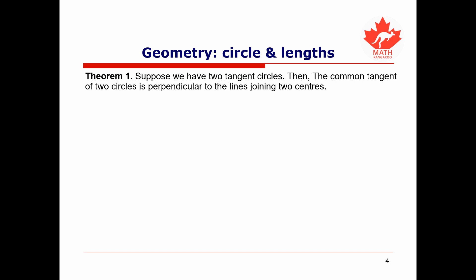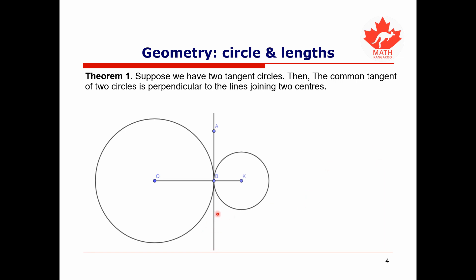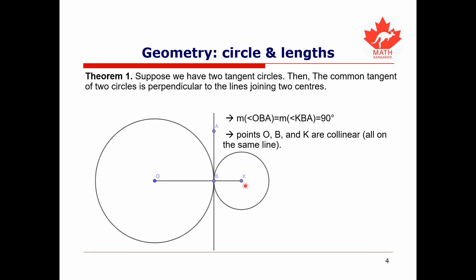Now let's have a look at an important theorem related to circles that are tangent to each other. Suppose we have two circles that are tangent to each other. The theorem tells us that the common tangent line of the two circles is perpendicular to the line joining the two centers. The line segment OB is perpendicular to the tangent line, and the line segment BK is also perpendicular to the tangent line. So we can deduce that points O, B, and K are collinear, meaning they all lie along the same line, because the angle between O, B, and K has to be 180 degrees.